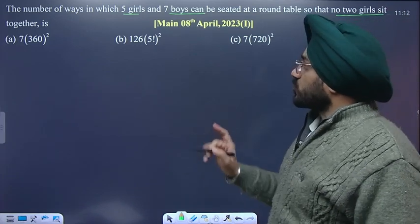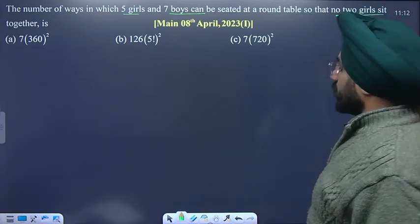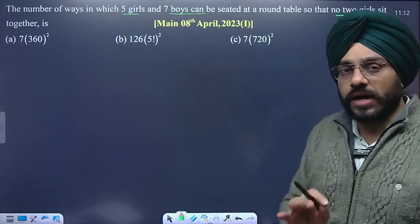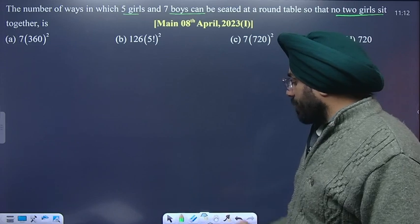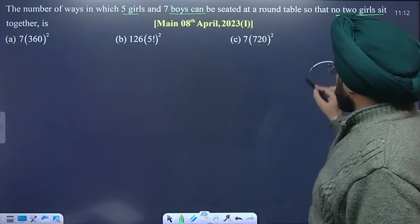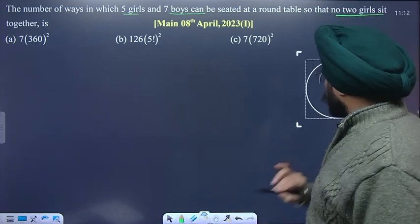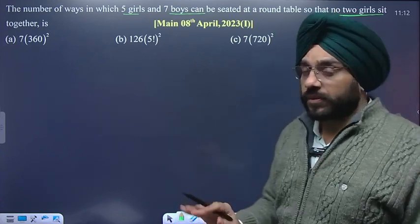If no two girls are together, then we will use the gap method. In the gap method, first of all, you will place persons on which no conditions are imposed. In this case, there are no conditions on boys.